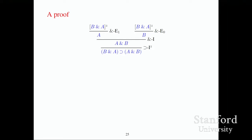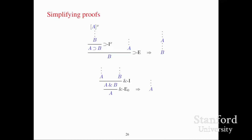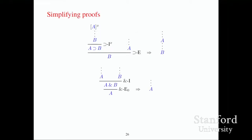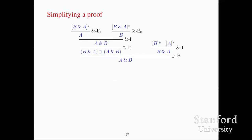The other thing you can do with proofs is simplify them. This proof happens to be in simplest form, but we'll see an example of a proof not in simplest form. Here's a proof not in simplest form — this is the proof we had before that B and A implies A and B.